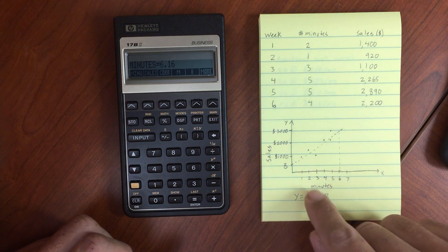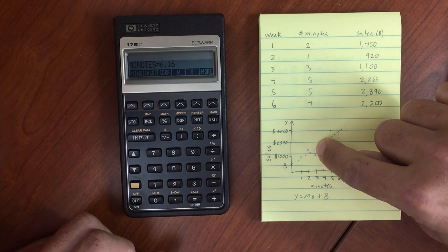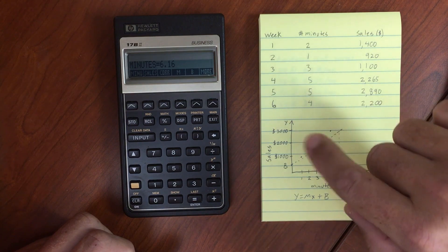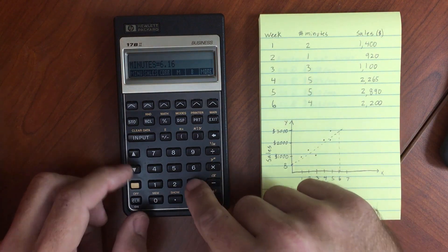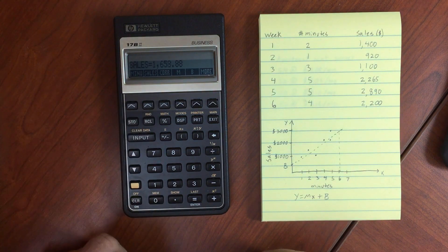Let's say we wanted to do, oh, three minutes. So about what would we get from three minutes? It looks like it'd be somewhere around $1,200 or so. So three minutes, enter that into our minutes. And then forecast what the sales is going to be, $1,600.